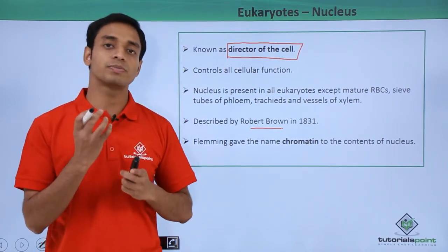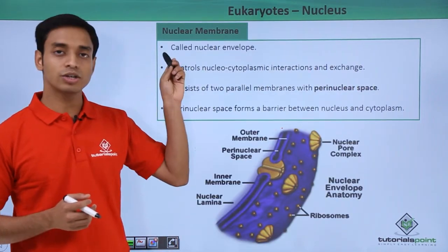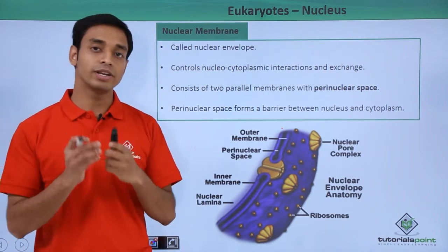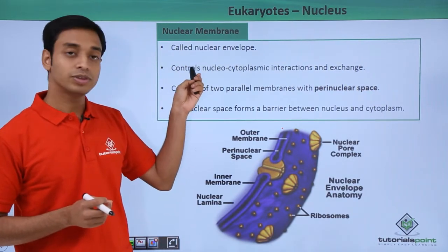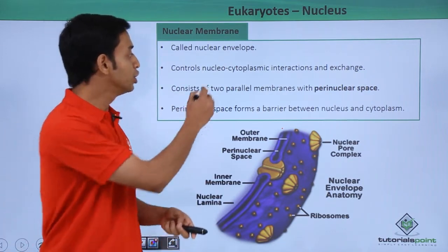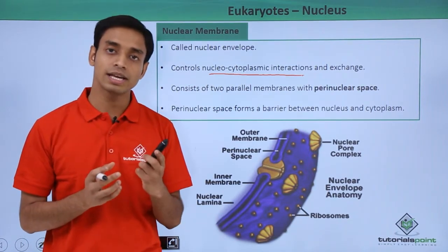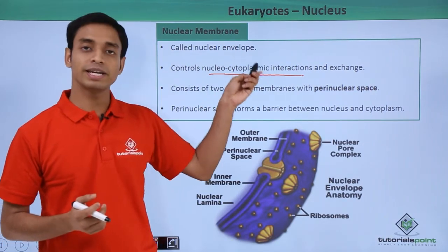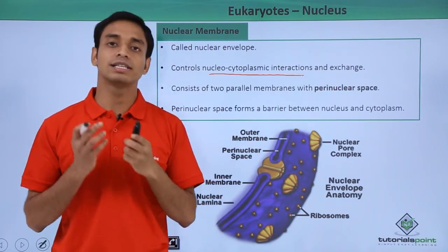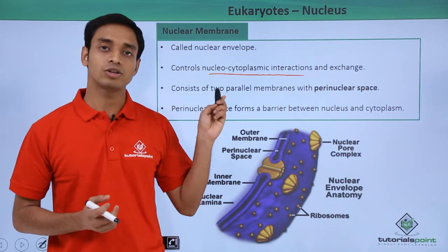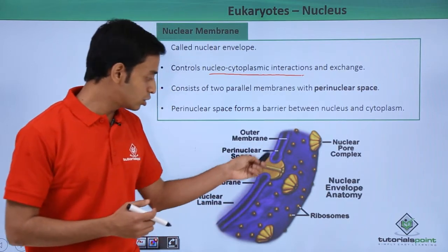Let us see the different structures of a typical nucleus. The first structure is the nuclear membrane, also known as the nuclear envelope or nucleolema. This nuclear envelope controls nucleocytoplasmic interactions — that is, the interactions happening between the nucleus and the cytoplasm. It also controls the exchange of materials between the cytoplasm and the nucleus.